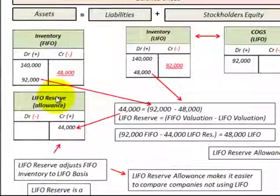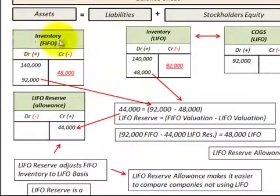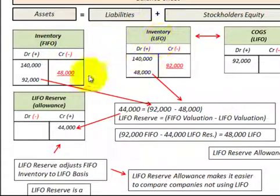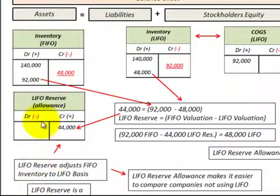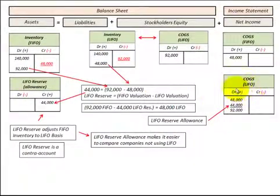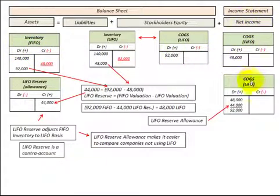To summarize: to determine your LIFO reserve, first value your inventory on both a FIFO and LIFO basis. Then take the difference between the two inventory valuations to determine your LIFO reserve amount. This LIFO reserve is a contra account to your FIFO inventory account — it converts your FIFO inventory to a LIFO basis and also adjusts your cost of goods sold from FIFO to LIFO. Using this reserve, you can determine both the LIFO inventory for your balance sheet and the LIFO cost of goods sold for your income statement.